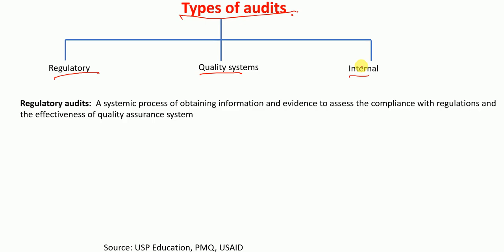The first is the regulatory audit. A regulatory audit is a systematic process of obtaining information and evidence to assess compliance with regulations and the effectiveness of quality assurance systems. Basically, the regulatory audit is performed to obtain information and evidence to assess regulatory compliance and quality assurance system effectiveness.